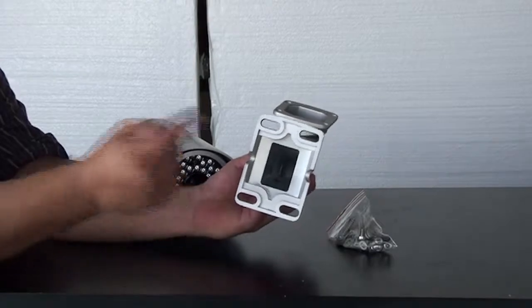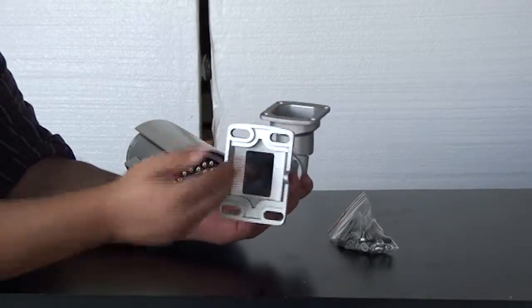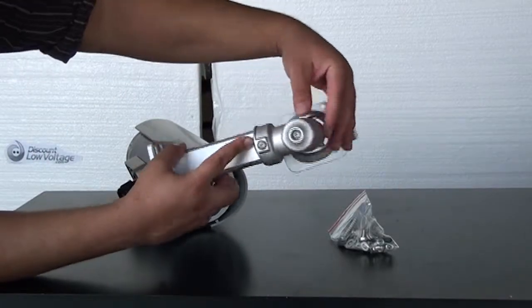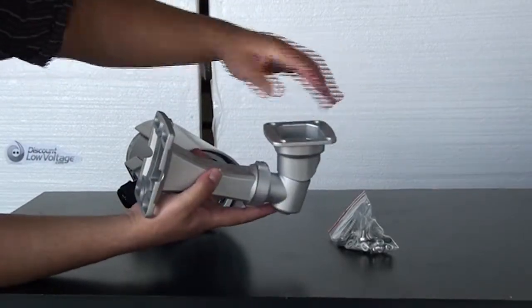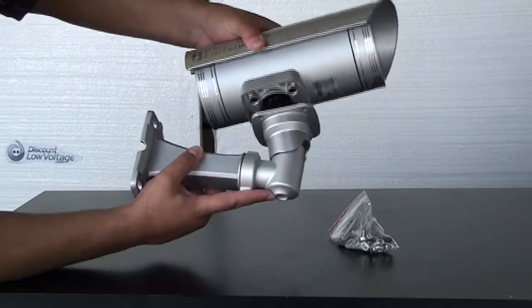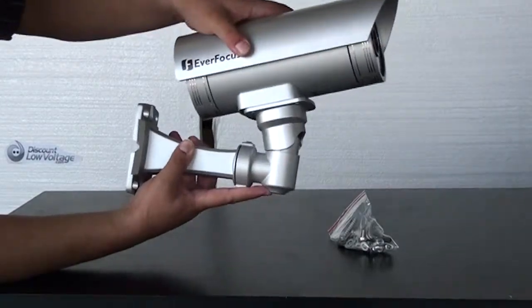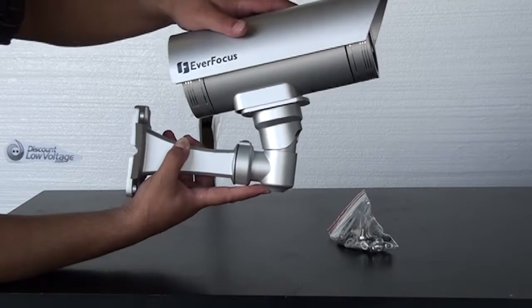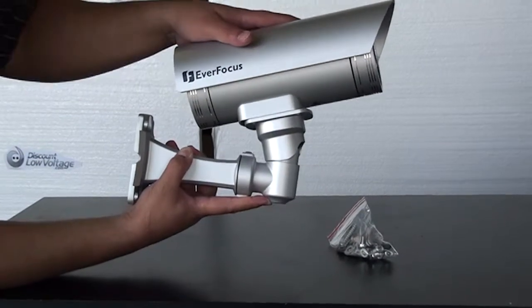The nice thing about it is the cable that you're going to run can be pulled in through here and then goes through the bottom of it into the bottom of the camera. This way your cable is protected for the long run from the environment and it also helps prevent wires getting cut.